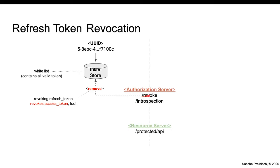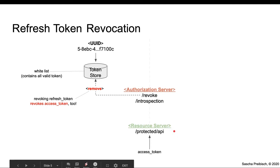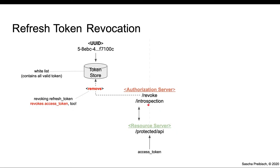Now, if a client sends a token to the revocation endpoint, the authorization server will take the received token and remove it from the token store. And if this token was a refresh token, access tokens related to this refresh token will often be revoked also. Now, if an access token is received at a resource server, the resource server cannot validate this token by itself because it's just a string, so it sends this token to an introspection endpoint. The introspection endpoint at the authorization server simply checks against the database whitelist if the token exists, and if so, it's a valid token and returns a response so the resource server can accept the incoming request.